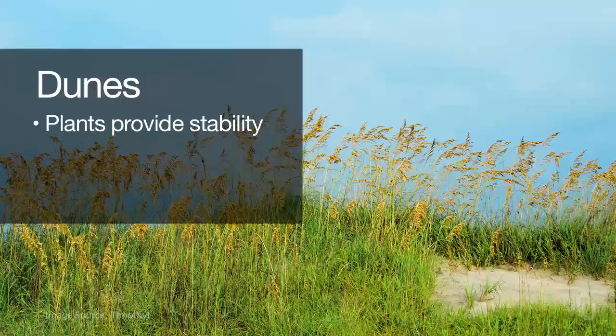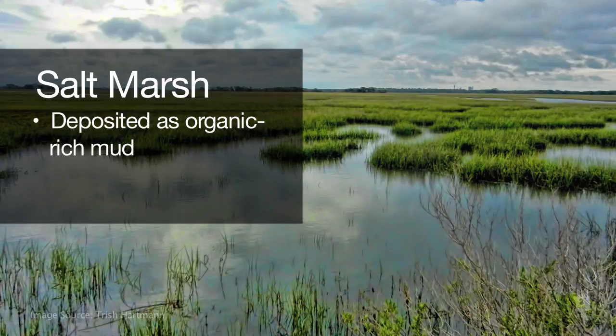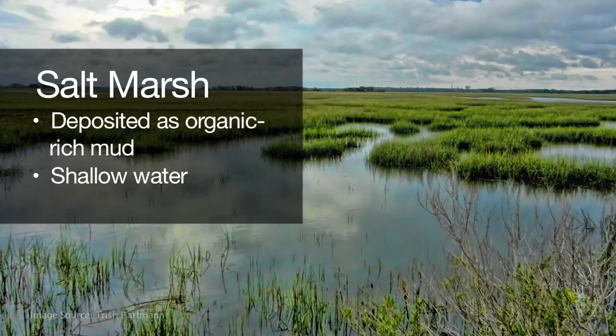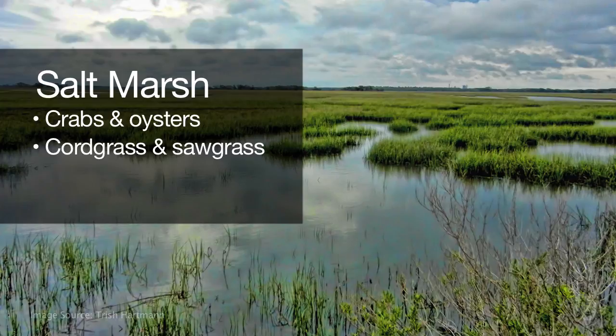The salt marsh, the back part of the barrier island, has very mucky, organic-rich sediment, sometimes in very shallow water. You get a lot of crabs and oysters and things like that, various types of grasses — cord grass, saw grass — and you get mussels, some clams, and birds.